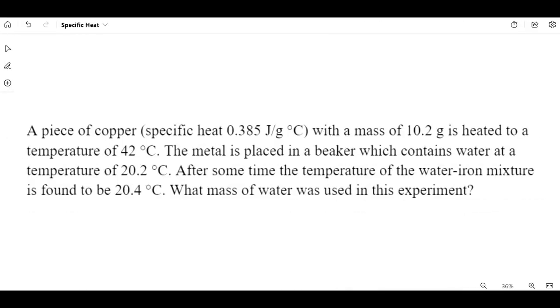This problem looks a bit different than the last one because we're not just dealing with one substance and its temperature change. Instead, we have a piece of copper that's been heated, and when it's placed into a beaker of much cooler water, the two objects reach the same temperature, which is 20.4 degrees. Now, we're asked to find the mass of the water that was used in this experiment. Before we dive into the math and how we're going to manipulate Q is equal to MC delta T, I want to show you this in the lab to give you a better sense of how we're going to approach the problem.